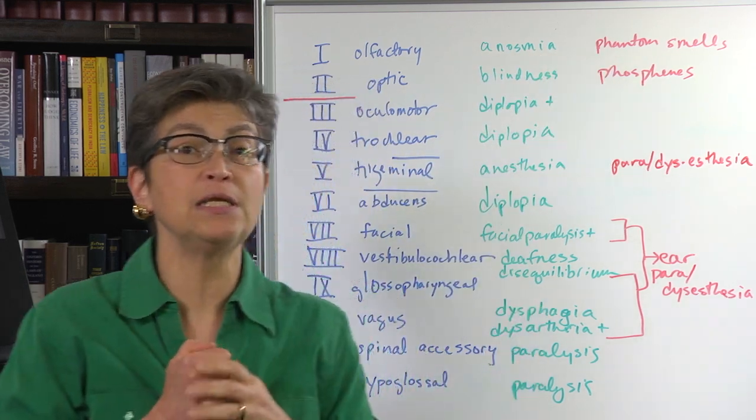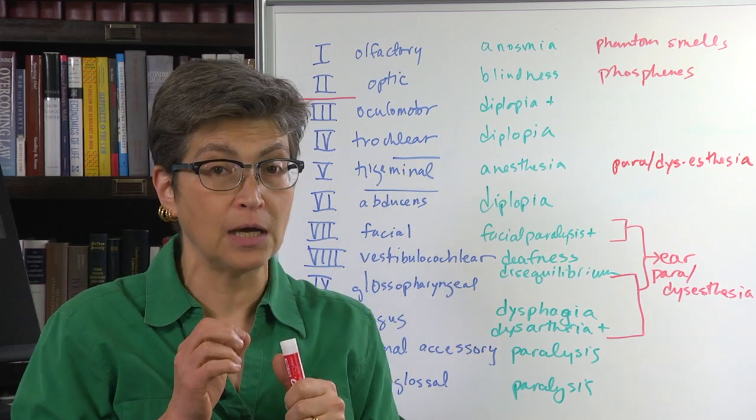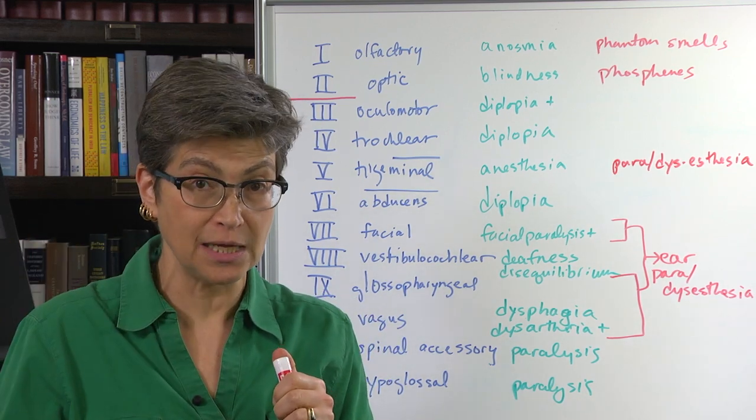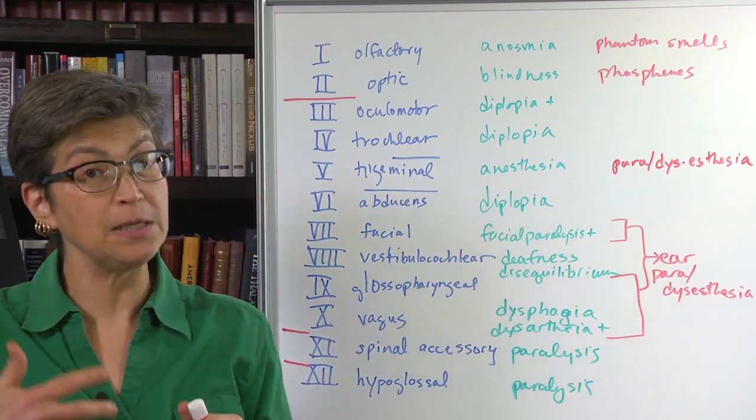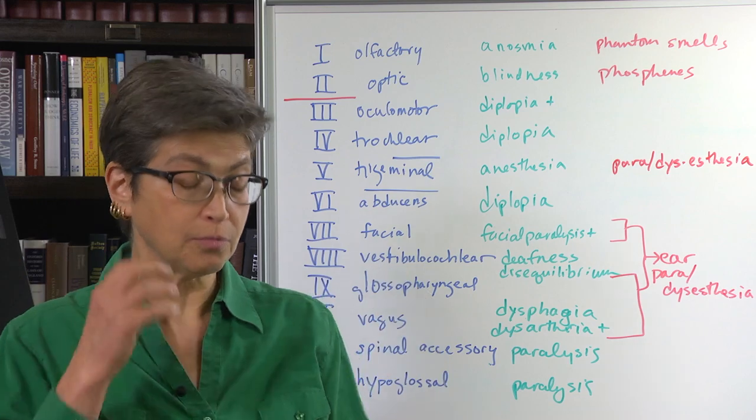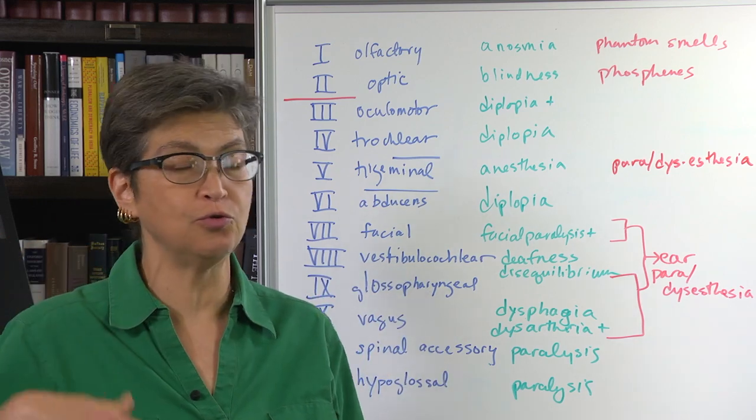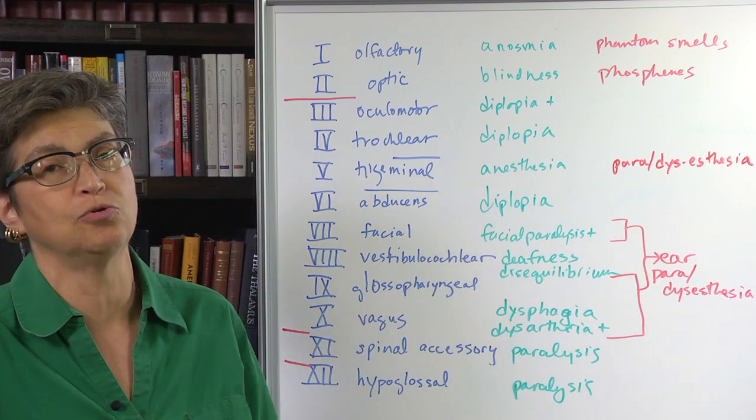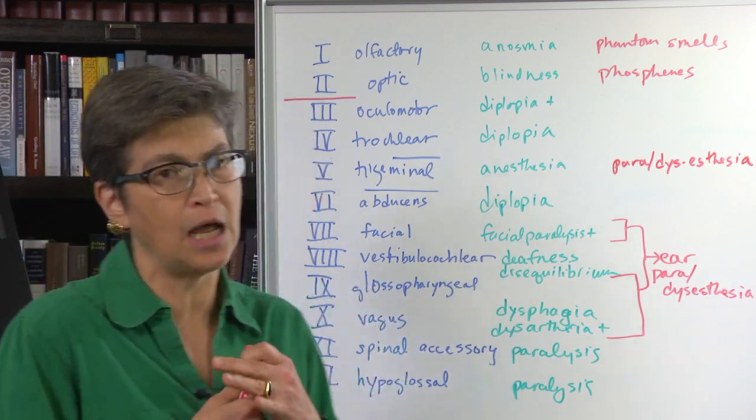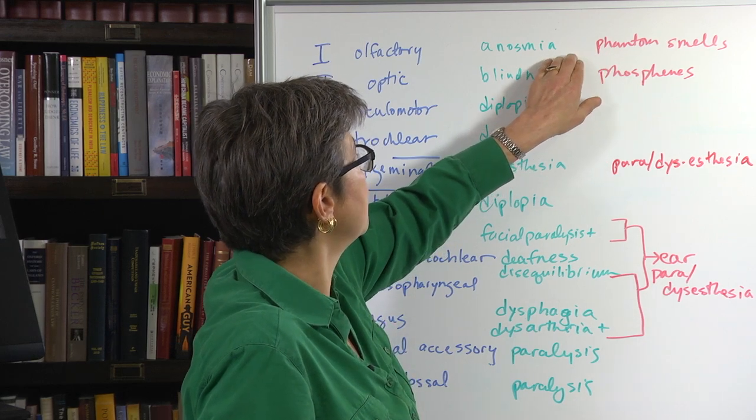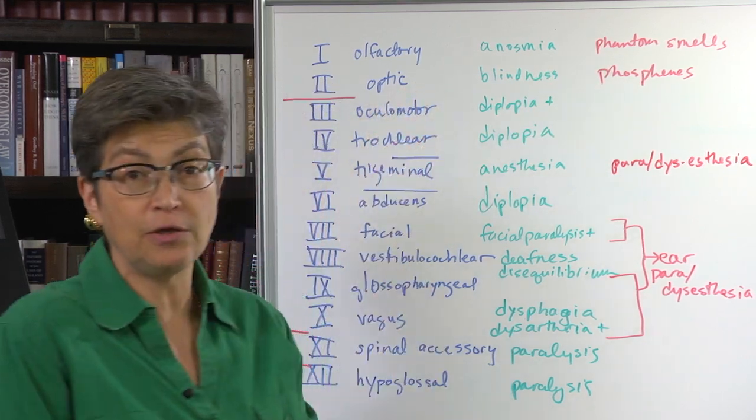And if there is an anosmia, it is often accompanied by a positive sign, which is phantom smells. And these phantom smells tend to be bad phantom smells. So you're smelling rotten food or it smells like rotten eggs or something that is not pleasant. These are the result of olfactory lesions.